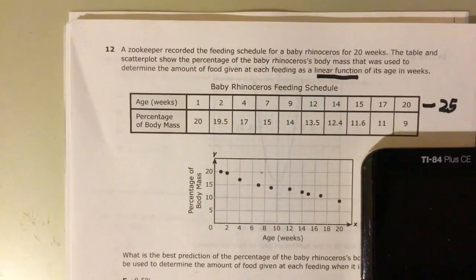A zookeeper recorded the feeding schedule for a baby rhinoceros for 20 weeks. The table and scatter plot show the percentage of the baby rhinoceros body mass that was used to determine the amount of food given at each feeding as a linear function.